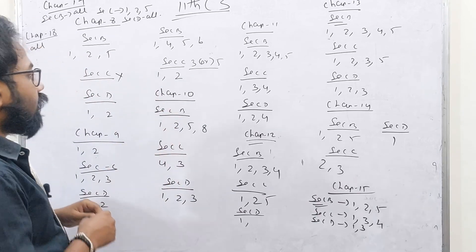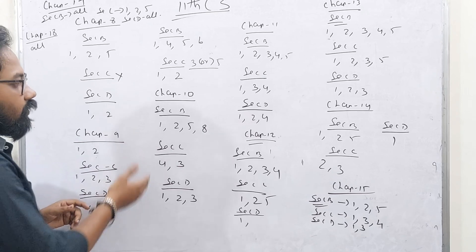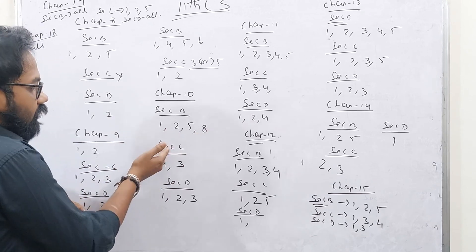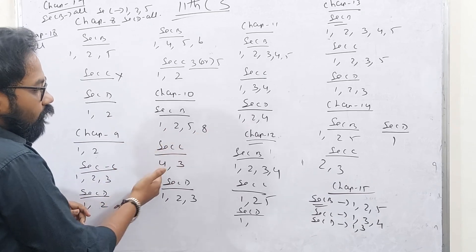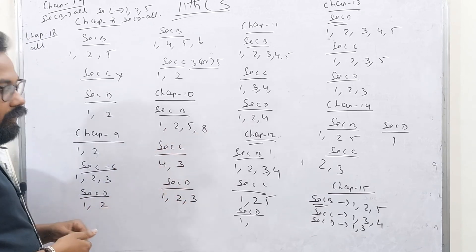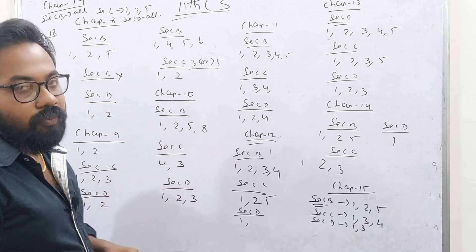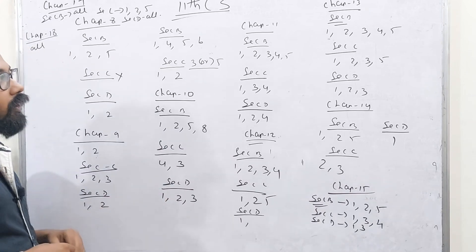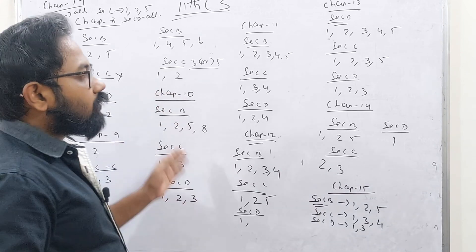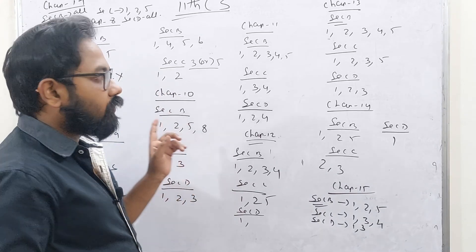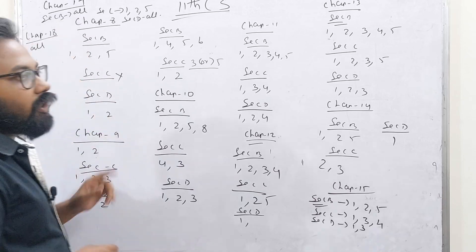Chapter 10 is 1, 2, 5, 8 — easy. Section C is 4, 3. Section D is 1, 2, 3. The third one is 1, 2 and the second one is 1, 2. If you look at the second one, you can book in.